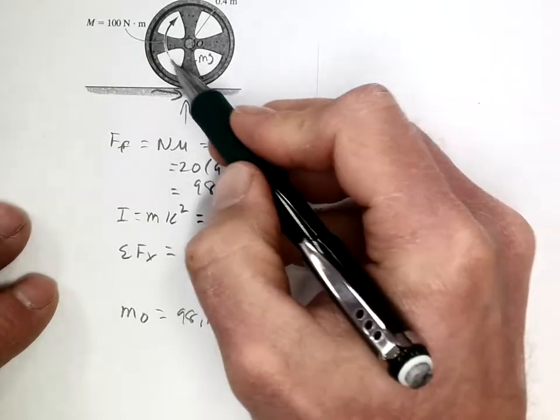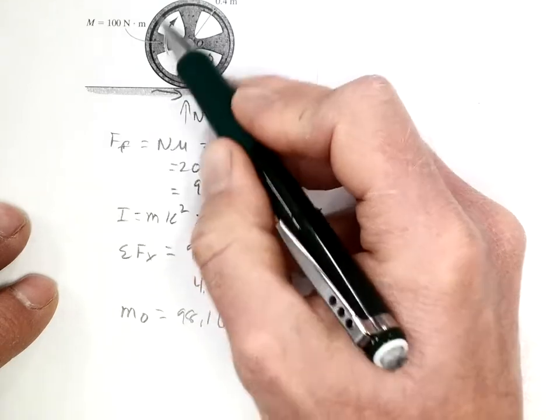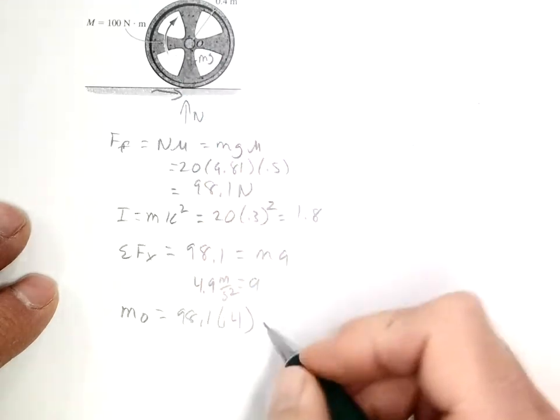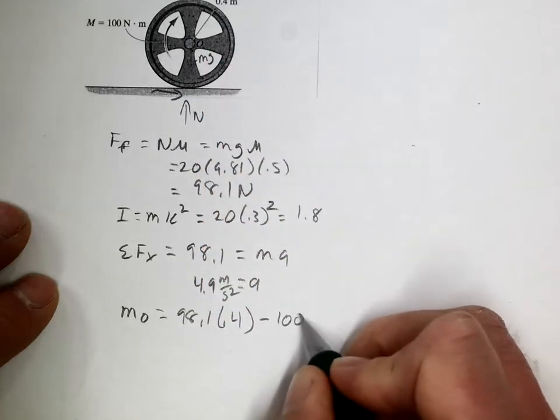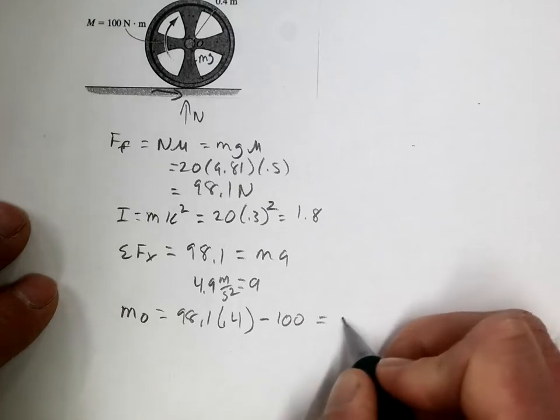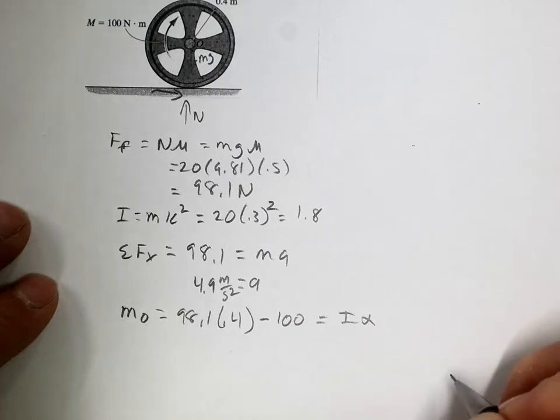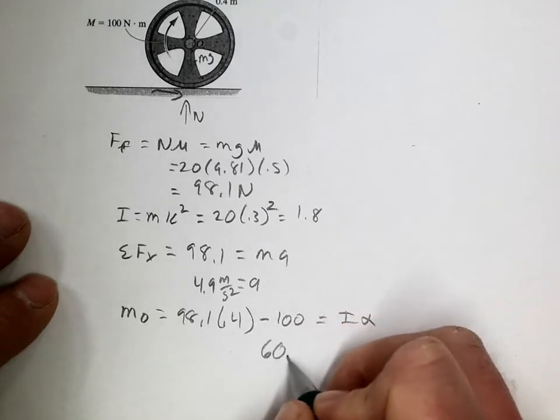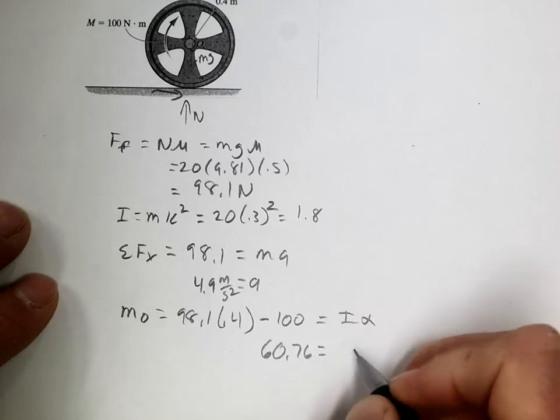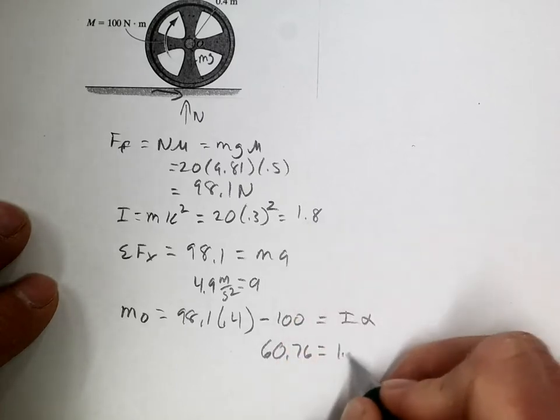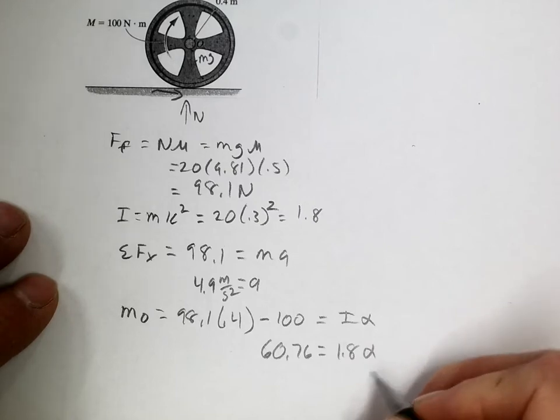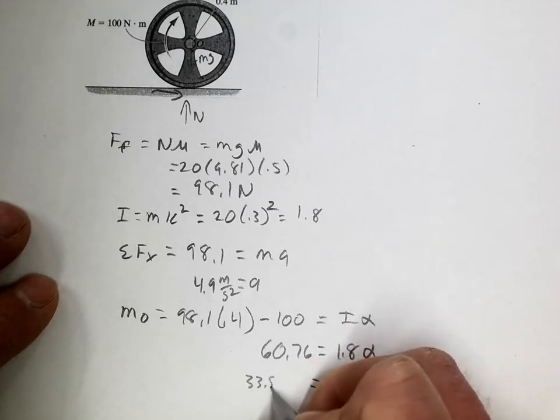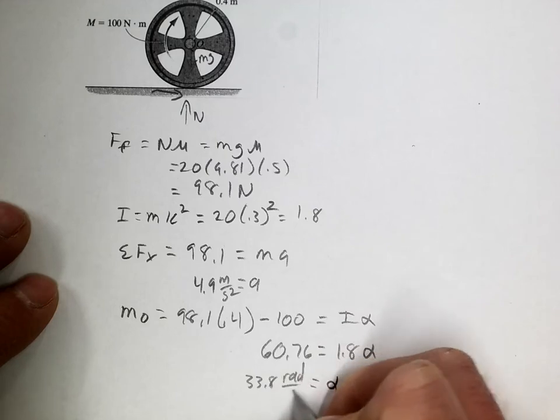we have the applied moment of 100, that's in the negative direction, and that equals I alpha. So that gives us negative 60.76 equals 1.8 times alpha, and alpha equals 33.8 radians per second squared.